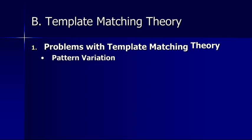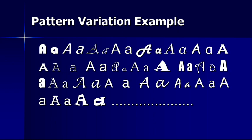There are a number of problems with template matching theory from the start. The first has to do with pattern variation. Essentially, you would have to have a template for every different variant of the same stimulus. So all of these are the letter A — we have no difficulty determining that — however, we would require a different template for each one. That seems to be rather non-parsimonious; it's a pretty cumbersome way to identify a particular object.